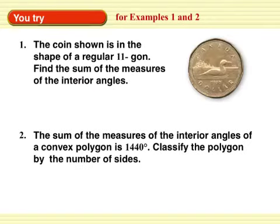Okay, you try. The coin shown is in the shape of a regular 11-gon. Find the sum of the measures of the interior angles. And then the sum of the measures of the interior angles of a convex polygon is 1,440 degrees. Classify the polygon by the number of sides. Hold on, I missed something on the last slide. So with number 2, we need to classify the polygon by the number of sides. I'm going to push pause. You're going to work the problem on your own in your notes.